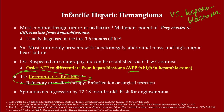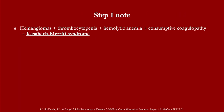Treatment for IHH is propranolol — this is notable because the other liver tumors discussed don't have medical treatment. Propranolol reduces the size of the hemangioma and helps treat complications such as high-output cardiac failure from the extra vasculature. If refractory to medical therapy, surgical management is an option. Good news: spontaneous regression occurs by early toddlerhood, around 12 to 18 months. However, there is a risk for angiosarcoma.